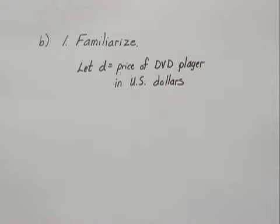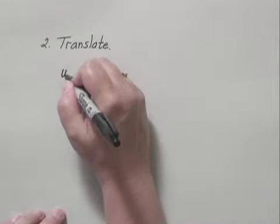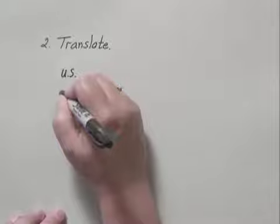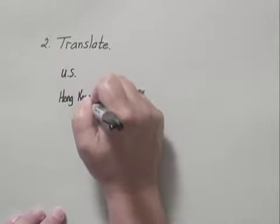We move to step two, which is to translate. Again, we will translate to a proportion. And we'll be writing the U.S. dollars in the numerator and Hong Kong dollars in the denominator for both ratios.